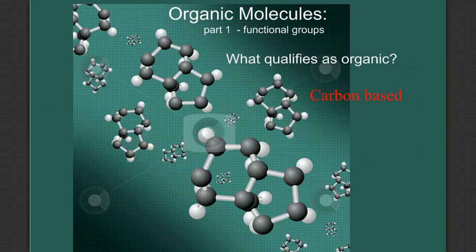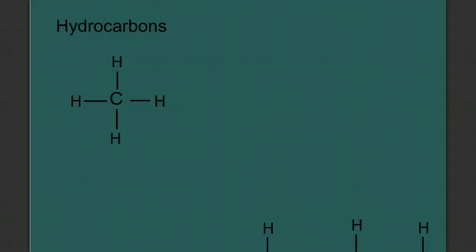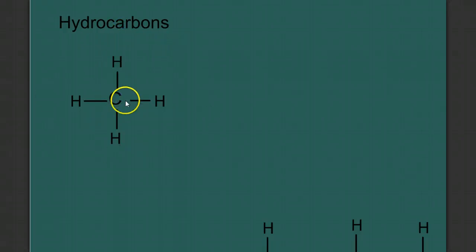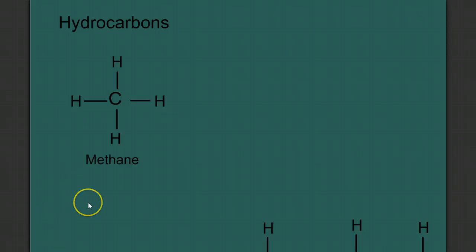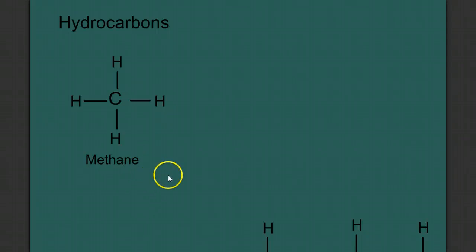Let's start with the simplest of our organic molecules, a simple hydrocarbon made of one carbon and four hydrogen. We call this molecule methane, otherwise known as natural gas. This is a very simple molecule used as a fuel — we burn it, we use it to heat our homes.